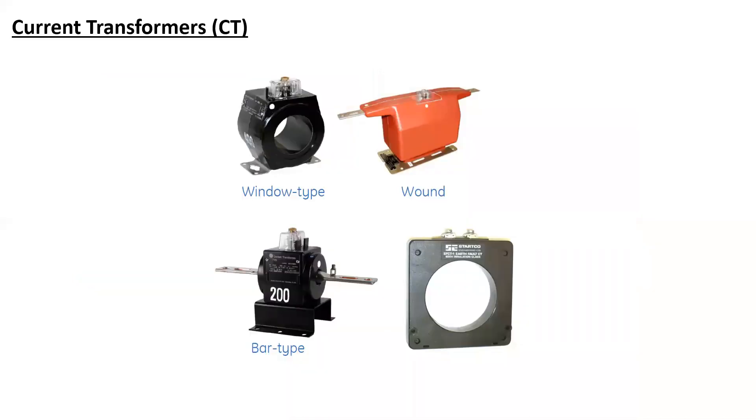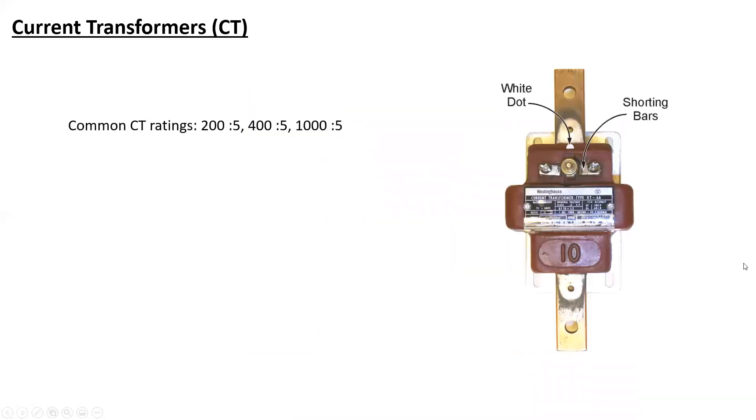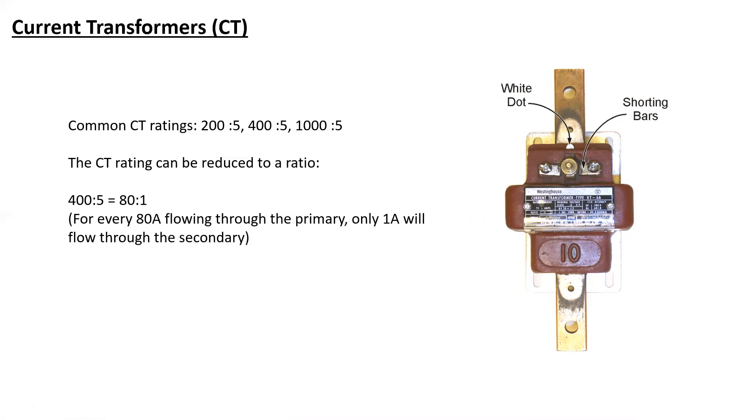There's lots of different types of CT forms out there. Bar type, window type are the most common. Window type, a lot of people will be familiar with this style where you really can just mount it wherever and it hangs on the conductor sometimes. Common ratings are 200 to 5, 400 to 5, 1000 to 5. And what that's in reference to is how many amps would be flowing on the bar and how many amps would then be present on the secondary. So, a 400 to 5 would mean it has a ratio of 80 to 1. Now, CTs are kind of interesting transformers, because their output is always rated at 5 amps, always.